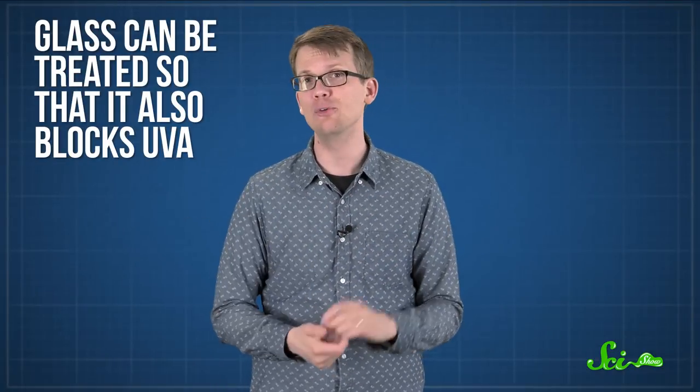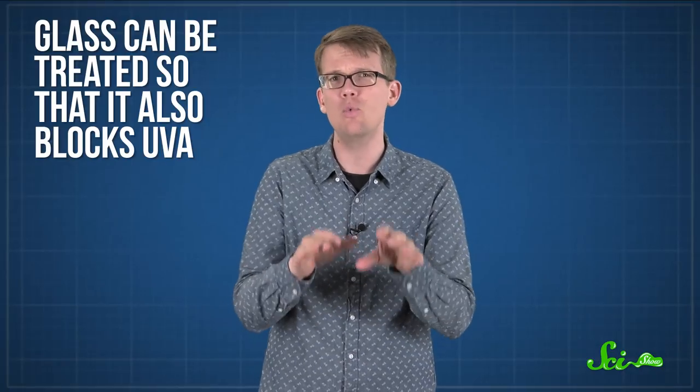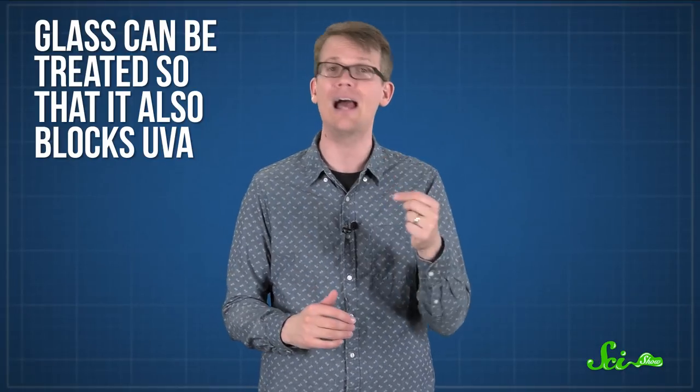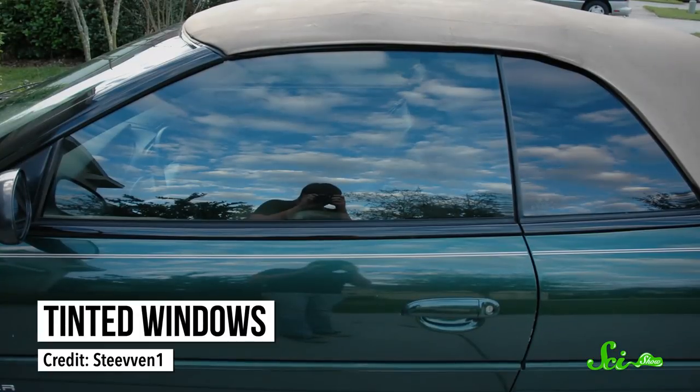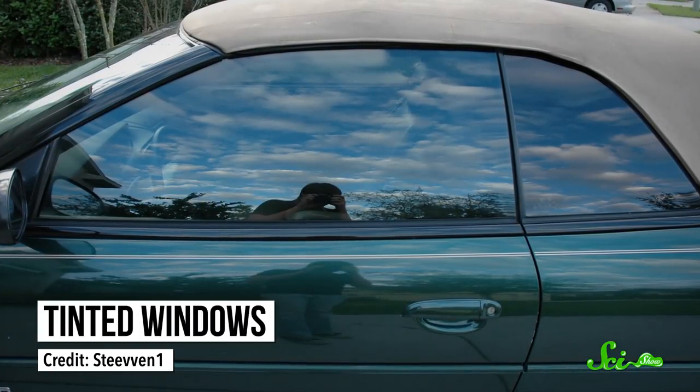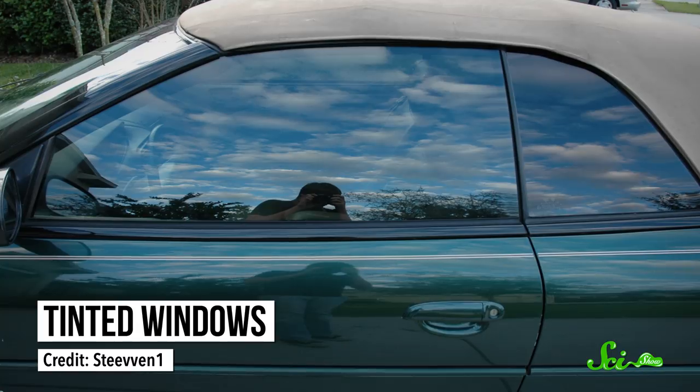Glass can be treated so that it also blocks UVA, but in a car, the windshield is often the only glass given that treatment. Tinted windows can also help a bit, but they are not always as helpful as just wearing sunscreen if you're going for a long drive.